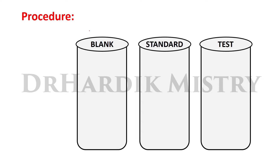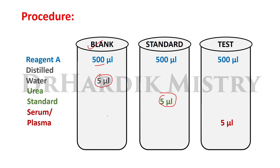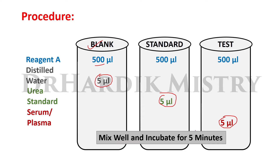For the procedure, take three test tubes labeled B for blank, S for standard, and T for test. Add 500 microlitre of reagent A in all three test tubes. Add 5 microlitre distilled water in the blank, 5 microlitre urea standard in the standard test tube, and 5 microlitre serum or plasma sample in the test test tube.